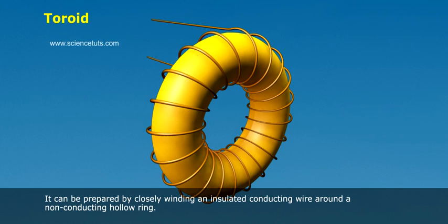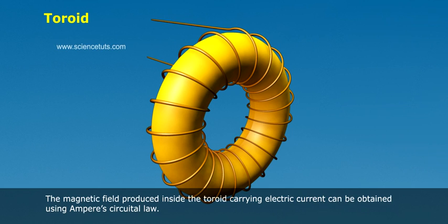It can be prepared by closely winding an insulated conducting wire around a non-conducting hollow ring. The magnetic field produced inside the toroid carrying electric current can be obtained using Ampere's circuit law.